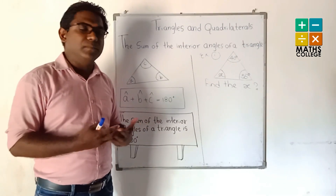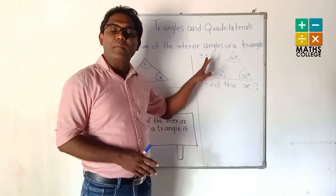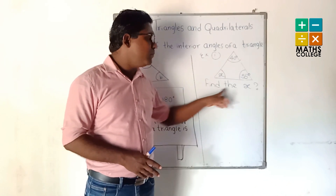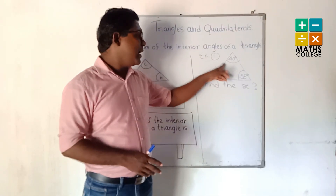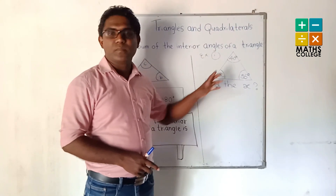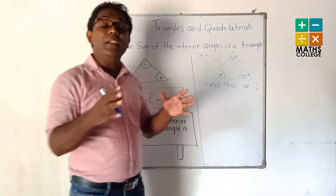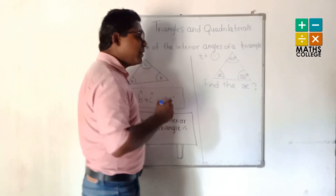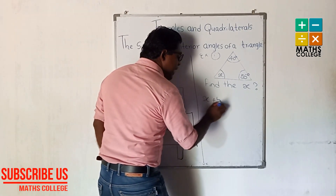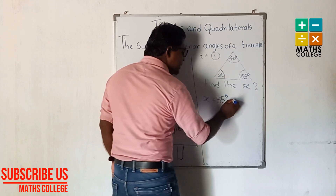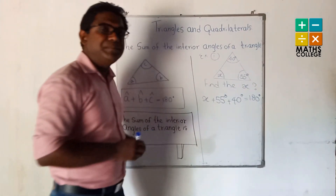Now we can solve some problems using this theorem. In this example, we have to find x. You can see three angles, but one angle is unknown. We use the theorem: the sum of interior angles is 180°. So we write: x + 55 + 40 = 180.